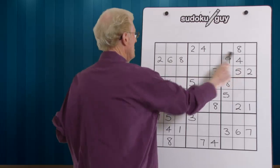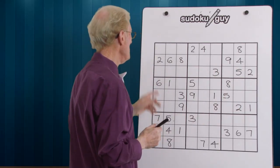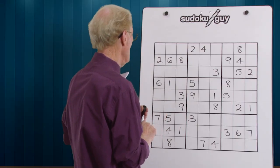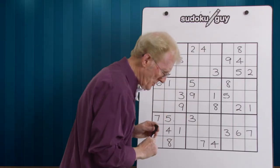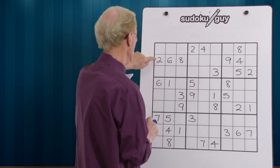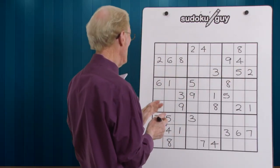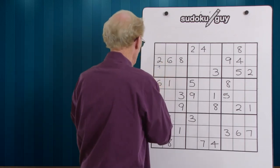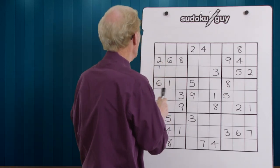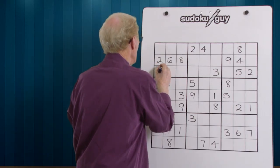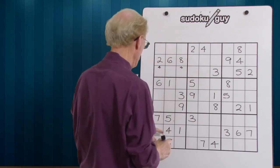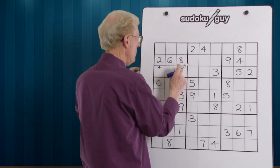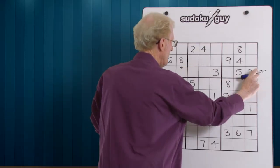First of all, we'll do the cross horizontal blocks. There's no ones in this one. There are two twos. If we've got a two there and a two there, we've got three twos. Now for fours - we have a four that's going to be there or there, and there's no four in the middle because of that four there. This is called the rule of exclusion, because you cannot have any other fours along this row.